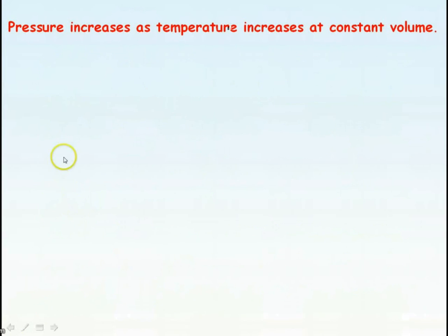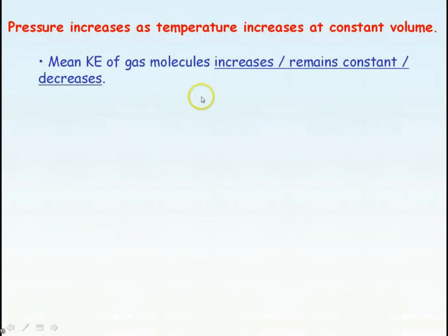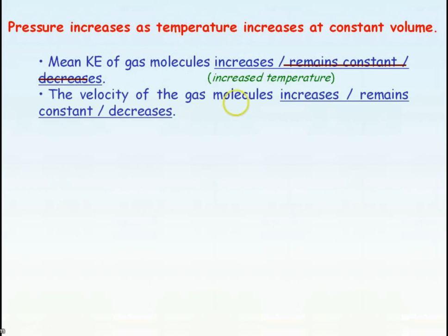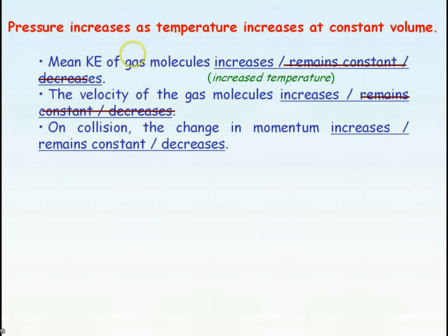We're now going to use the kinetic theory of gases to explain why pressure increases as temperature increases for a constant volume of gas. If temperature increases, the mean kinetic energy of the gas molecules will also increase, because mean KE is directly proportional to temperature. So the velocity of the gas molecules will also increase. On collision, the change in momentum of the gas molecule hitting the walls of the container will increase because the velocity has increased — remember, the change in momentum is given by minus 2mV.